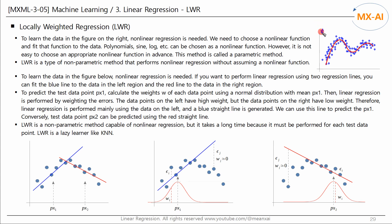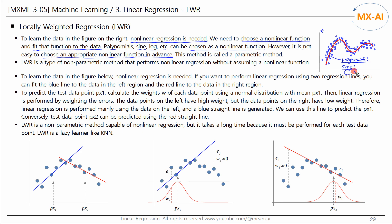To learn the data in the figure on the right, nonlinear regression is needed. We need to choose an appropriate nonlinear function and fit that function to the data. You can use nonlinear functions such as polynomial, sine, logarithmic functions, etc. However, it is difficult to choose an appropriate nonlinear function in advance. For this curve, it is hard to know whether it is better to choose a polynomial function, a sine or logarithmic function, or something else. In multidimensional space, it is even harder to know.